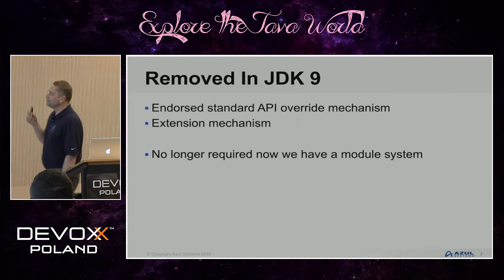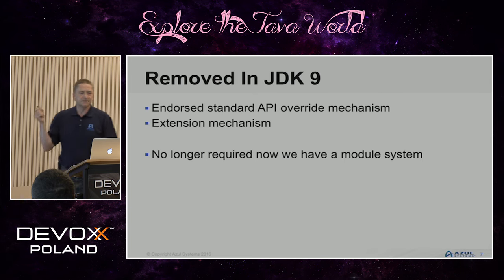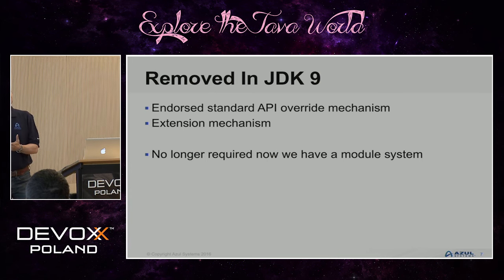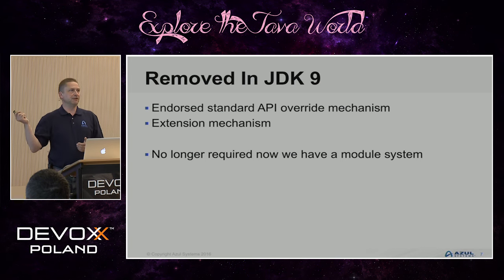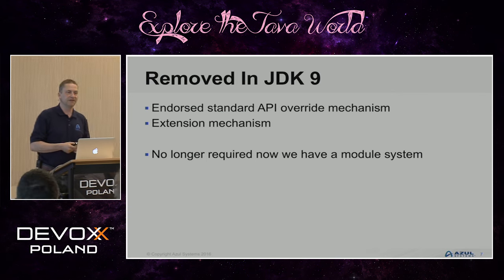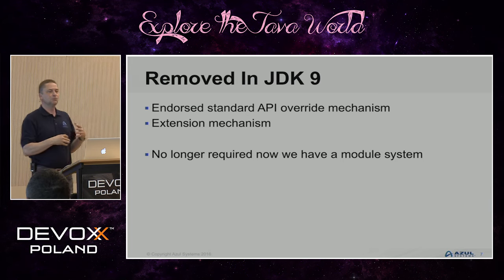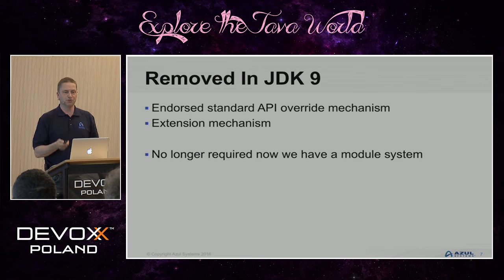Two other things being removed in JDK 9: the endorsed standard API override mechanism, primarily used by app server vendors who need to override standard APIs, and the extension mechanism. The primary reason these two things are being removed is that with a module system they're not actually required anymore — you can do the same thing using the module system.